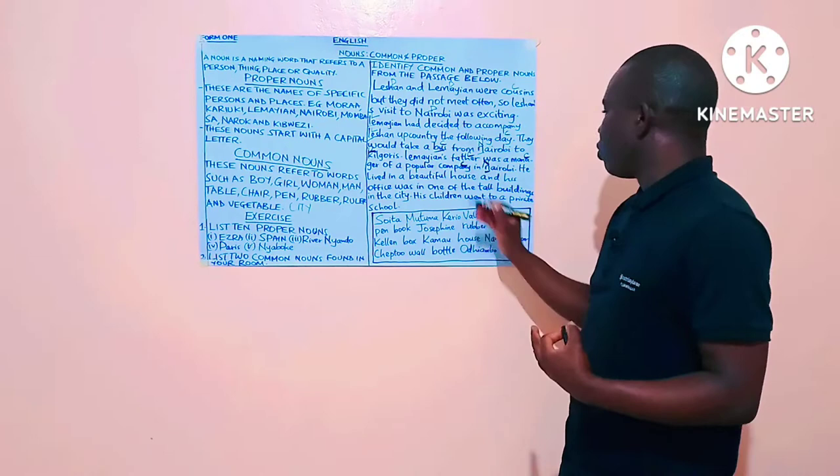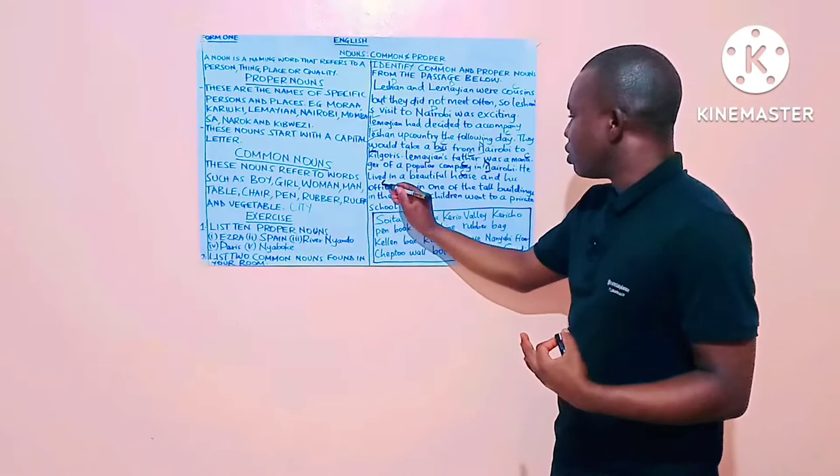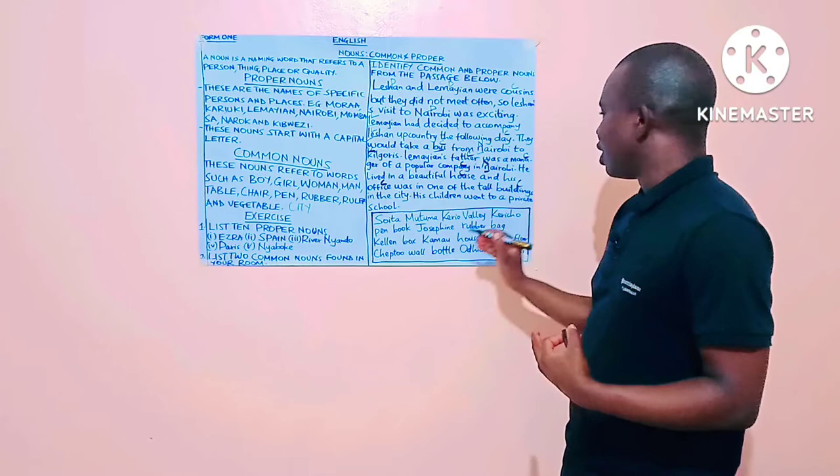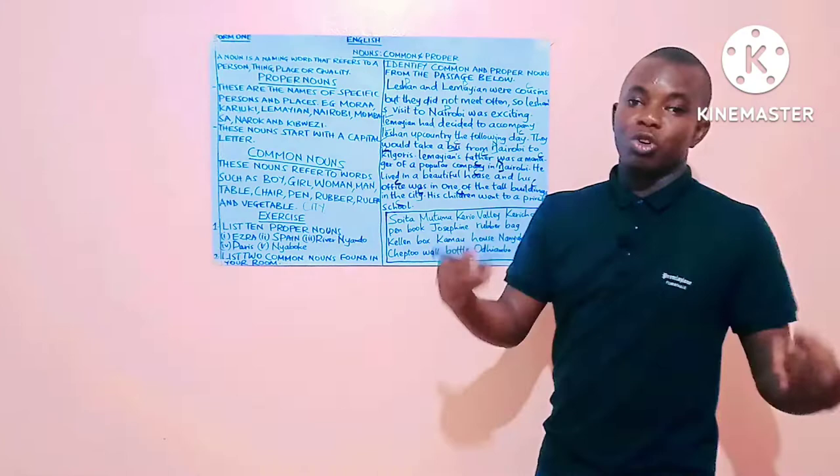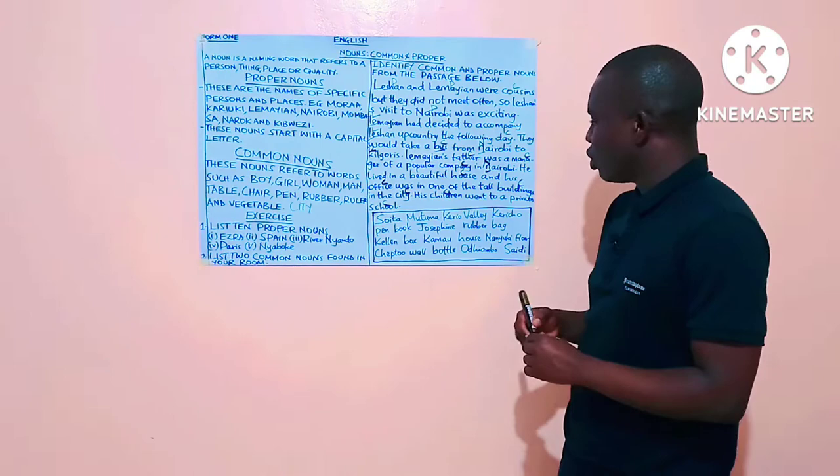He lived in a beautiful house. House, common noun. And his office, which is also a common noun, was in one of the tall buildings, common, in the city. City, common. His children, children, common noun, went to a private school, which is also a common noun.